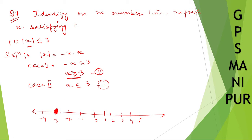It is greater than means this direction — minus 2 is greater than minus 3, so mark in this direction. Let me change the color of the pen; it will be helpful. So mark this whole thing dark. This is how you are going to draw. Now for the second condition, x is less than or equal to 3. From 3, it is equal to 3, and less than means this direction. So this is how we represent.